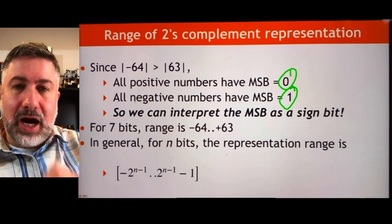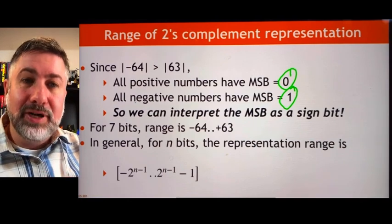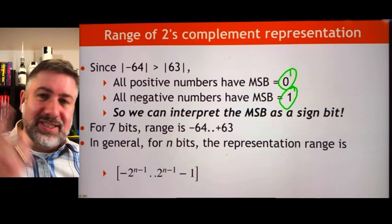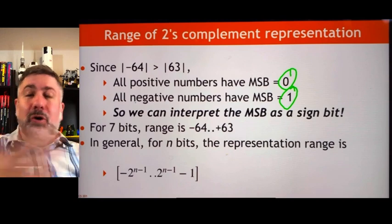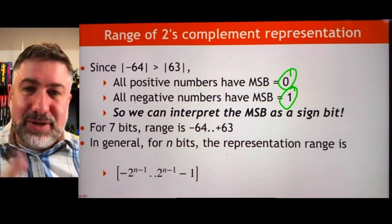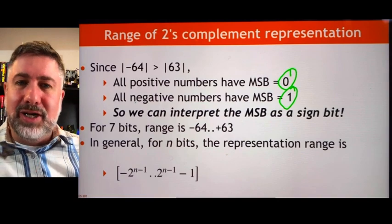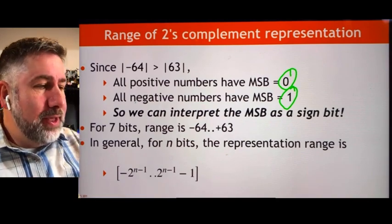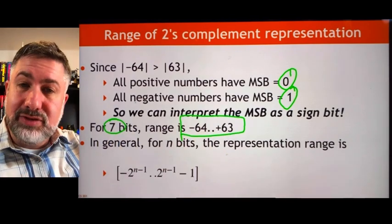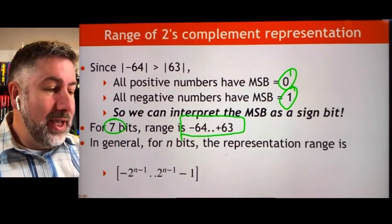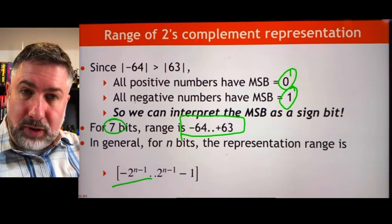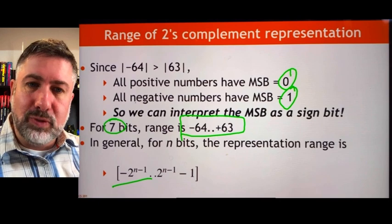The top bit of a two's complement number can be interpreted as the sign bit, which is great. We can just look at one bit and say, is it negative or positive — which was the whole point in the first place. That's why we tried signed magnitude. So in 7 bits, the range is numbers from negative 64 to positive 63.